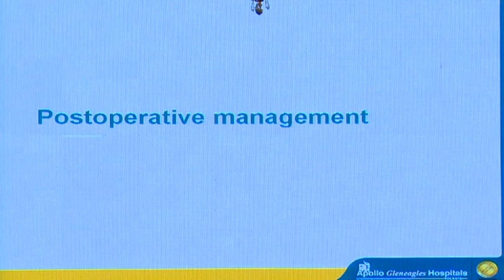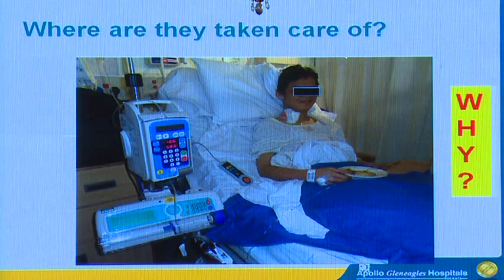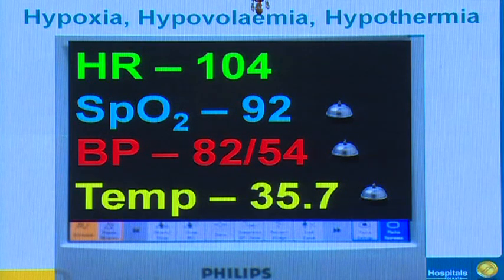For post-operative management, after surgery is over, where should these children be taken care of? Ideally, because of certain problems they have, it is better that they are taken care of in a high-dependency unit or a critical care unit. We are worried about their oxygenation — they might become hypoxic, so alarm systems are essential. They can have hypovolemia leading to hypotension, so fluids need to be addressed immediately. And as discussed, they have a tendency to drift toward hypothermic zones, which is why they need high-dependency care in the post-operative period.